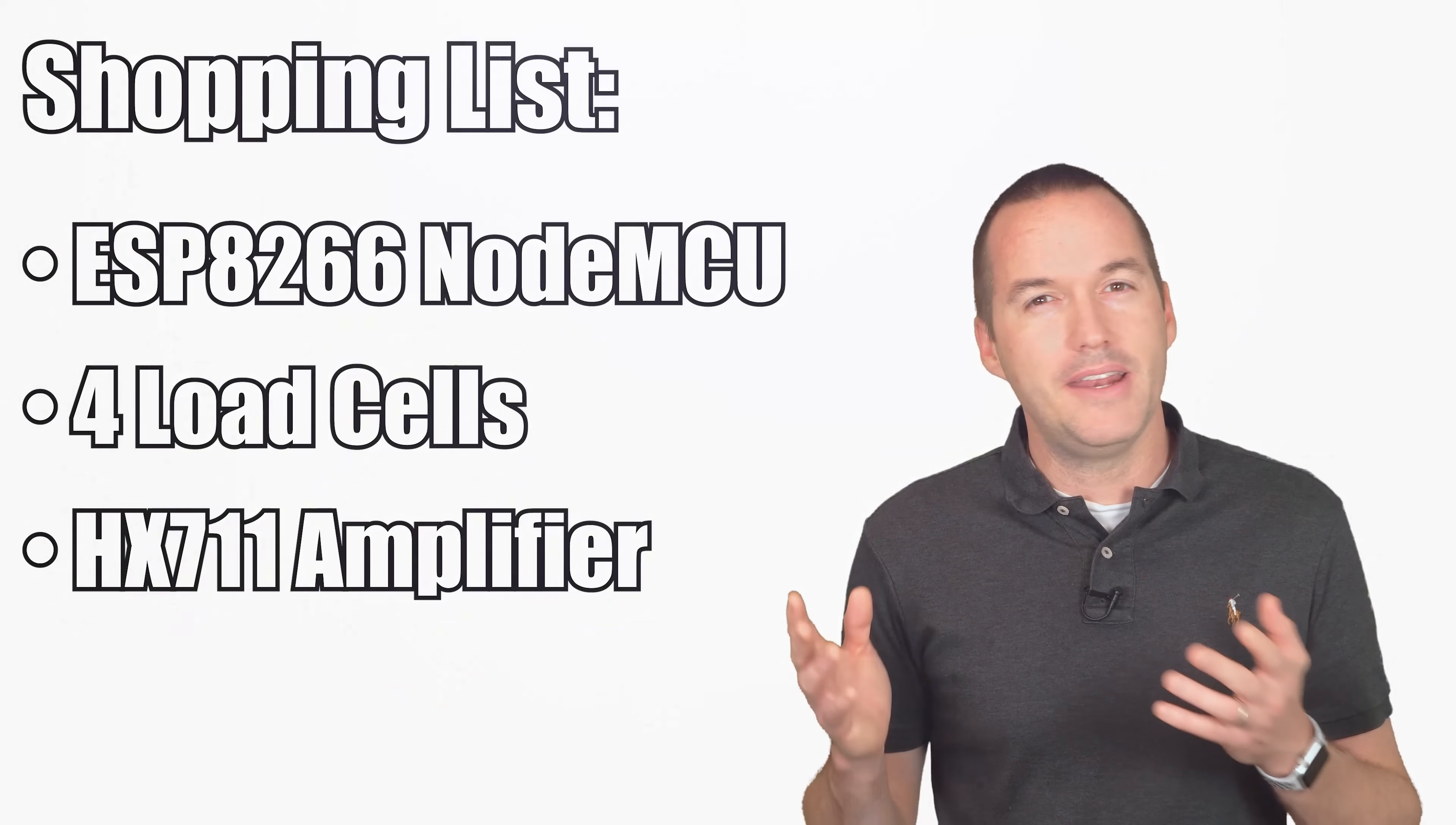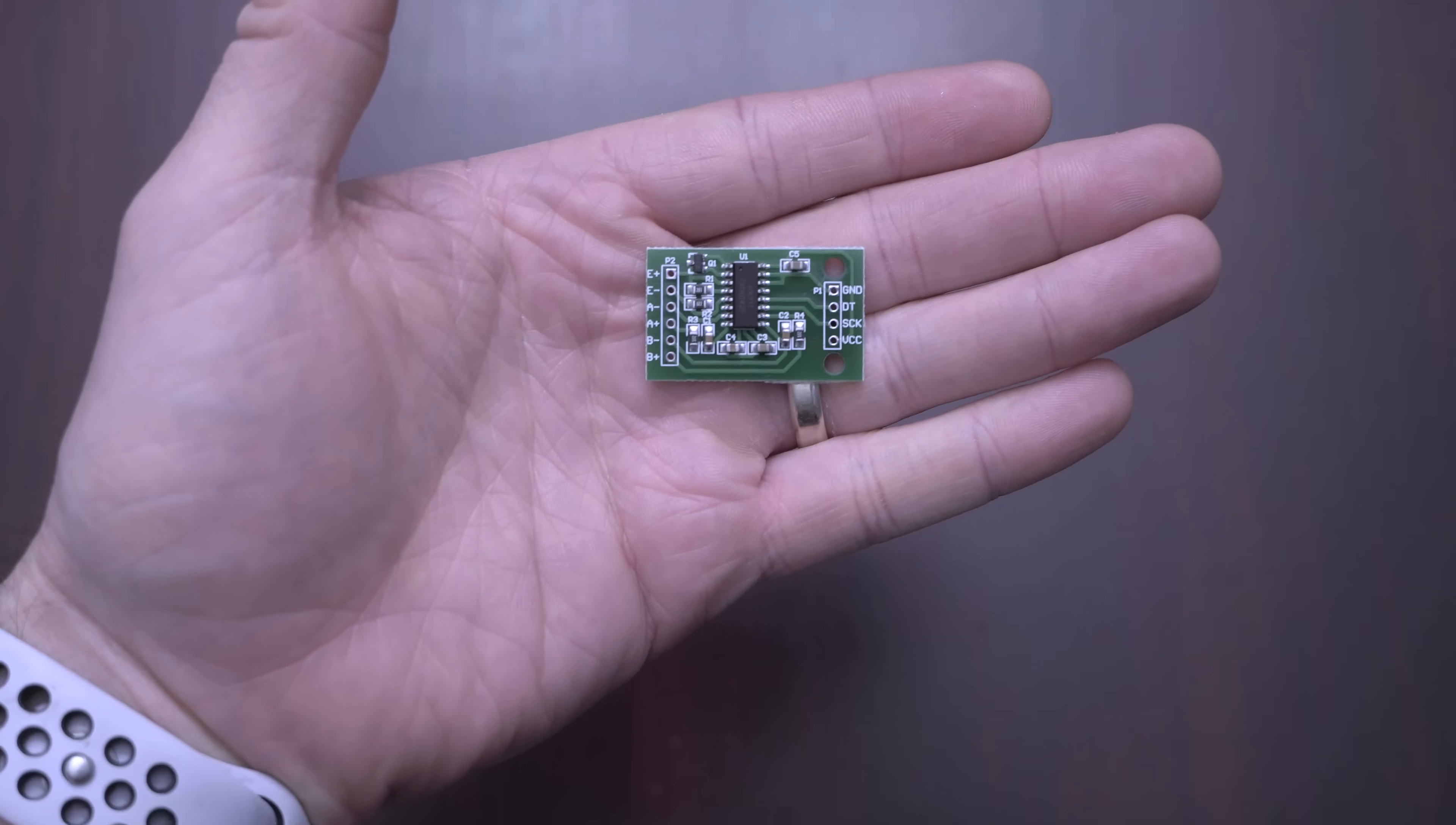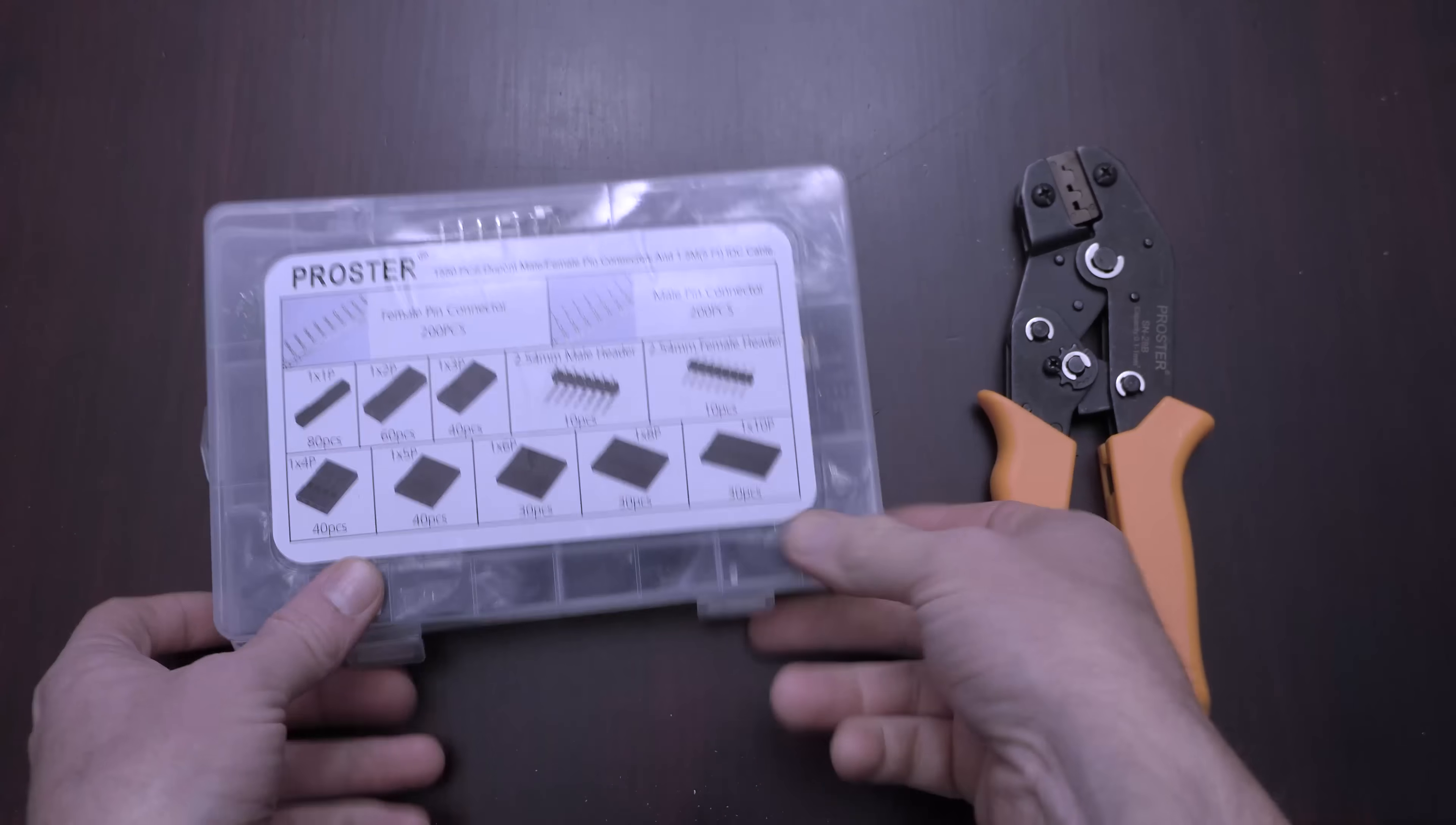To make this project you're going to need an ESP8266 base NodeMCU, a set of 4 load cells, and an HX711 amplifier. Those parts are available on Amazon for under $15, or on AliExpress for significantly cheaper than that. Links to both are down in the description. Optionally I used a set of dupont crimpers to make my connections easier, but they aren't necessary.